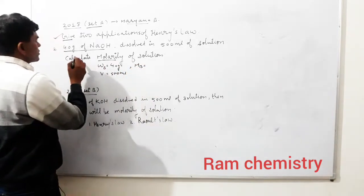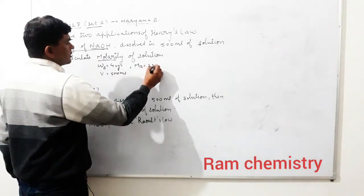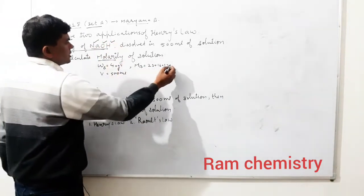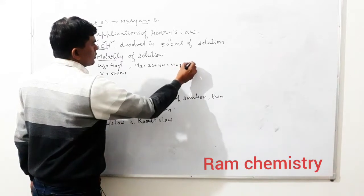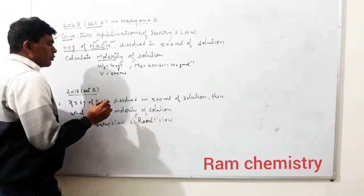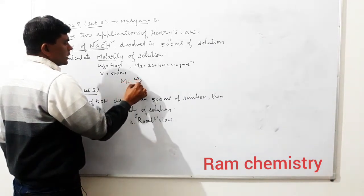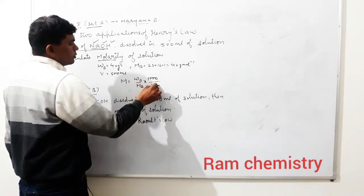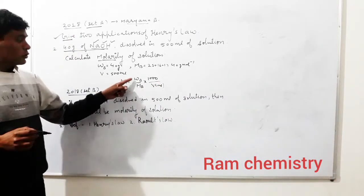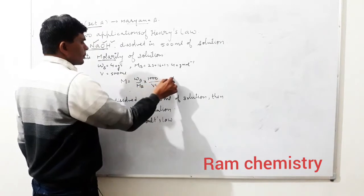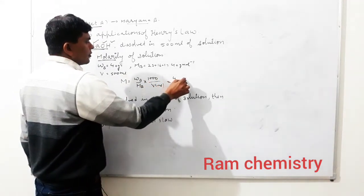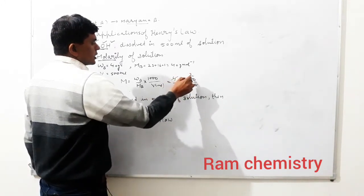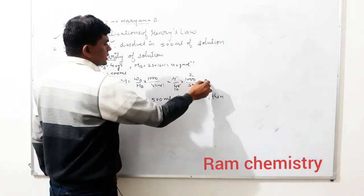Molar mass of NaOH: Na = 23, O = 16, H = 1. So molar mass = 40 gram per mol. Now molarity ka formula hai: WB upon MB into 1000 upon volume in ml. Putting values: WB = 4 gram, molar mass = 40, volume = 500. So 4 divided by 40 into 1000 upon 500 = 0.2 M.